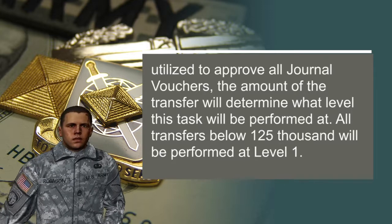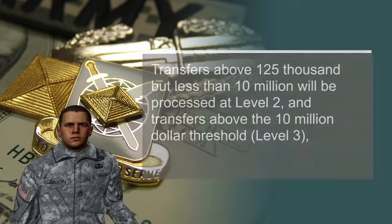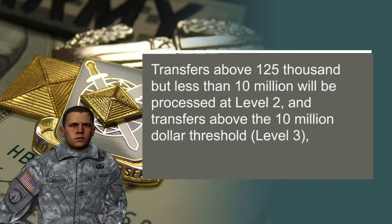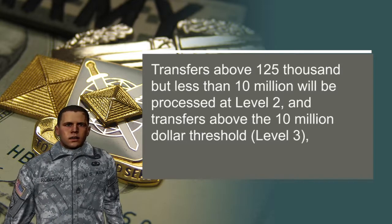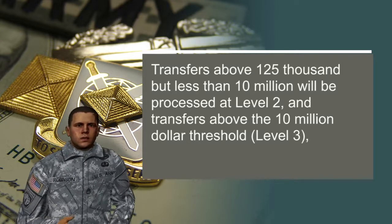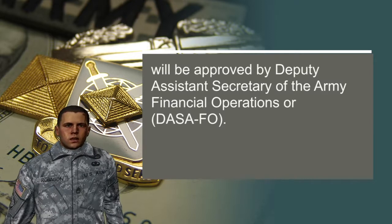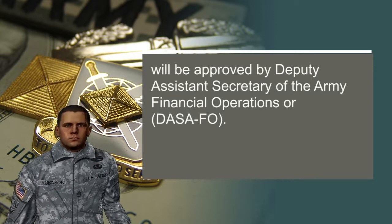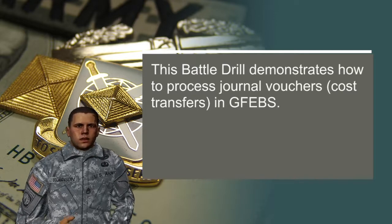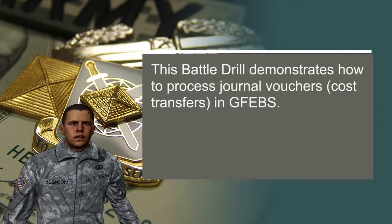All transfers below $125,000 will be performed at Level 1. Transfers above $125,000 but less than $10,000,000 will be processed at Level 2, and transfers above the $10,000,000 threshold, Level 3, will be approved by the Deputy Assistant Secretary of the Army Financial Operations, or DASA FO. This battle drill demonstrates how to process journal vouchers, cost transfers, in GFIBS.